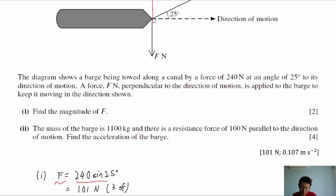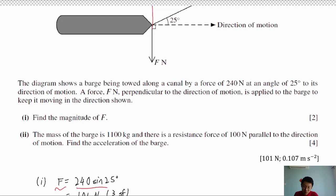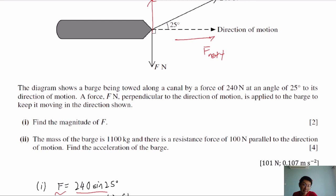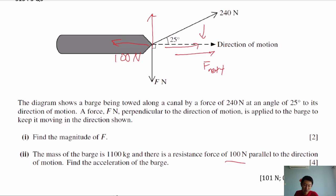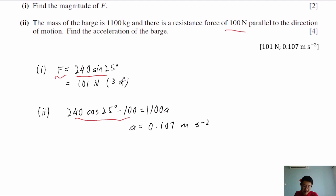The mass of the barge is 1100 kg and there is a resistance force of 100 N parallel to the direction of motion. To find the acceleration, use F = MA. The net force in the direction of motion is 240 cos 25 minus 100. This net force equals 1100A, giving the acceleration rounded to 3 s.f.